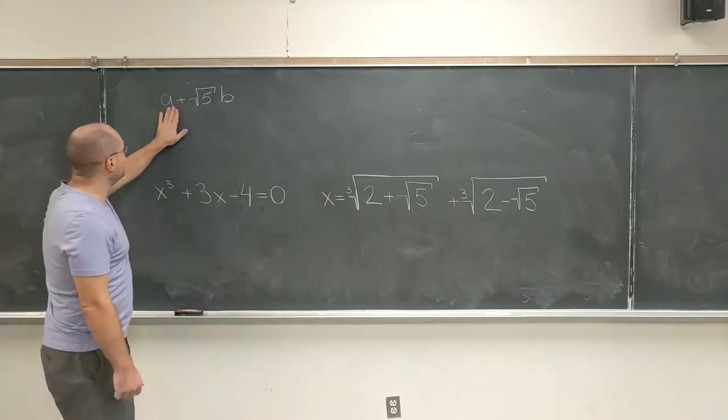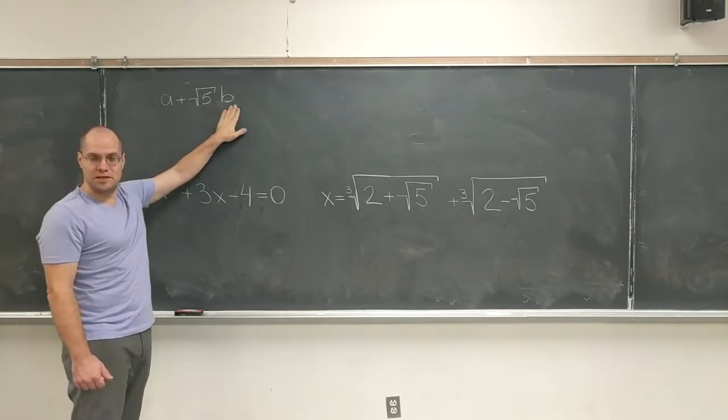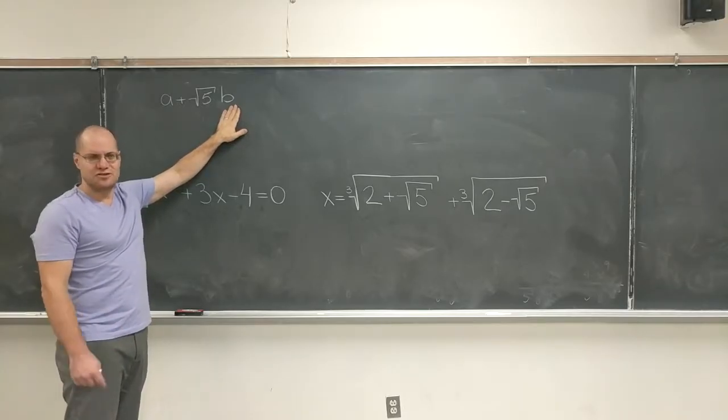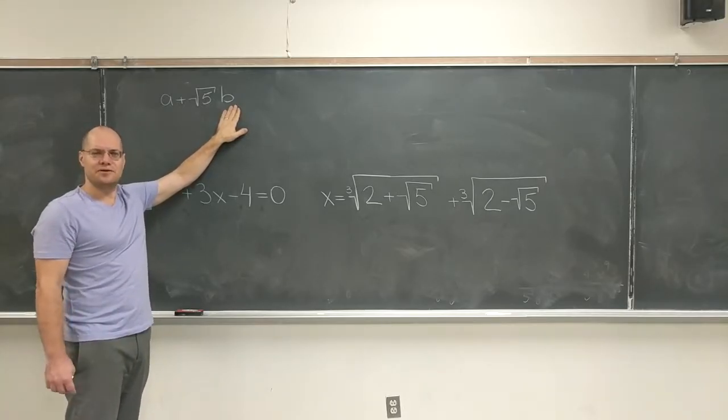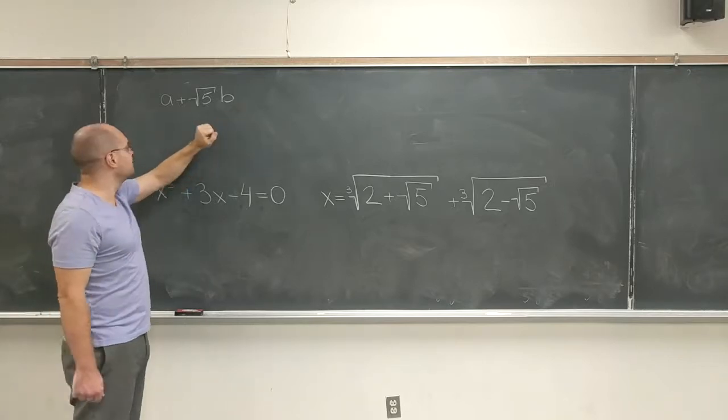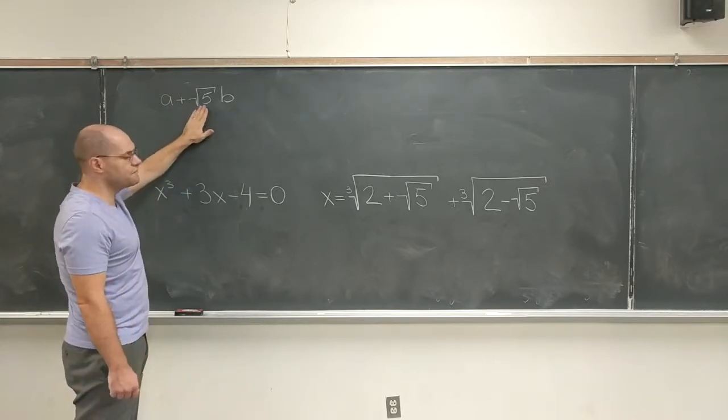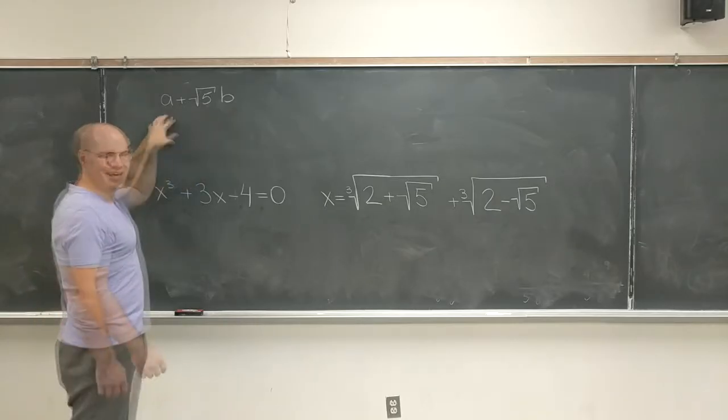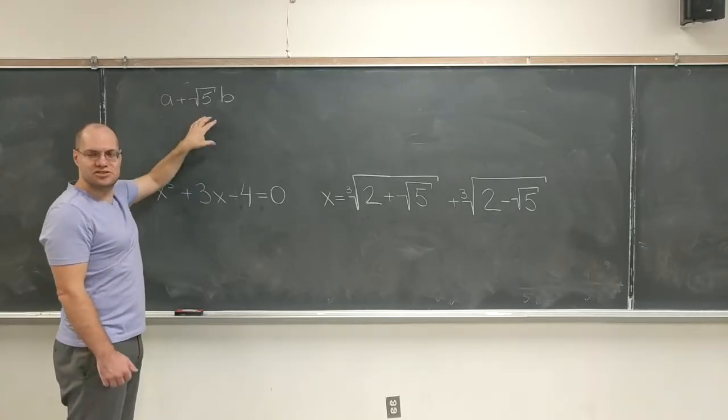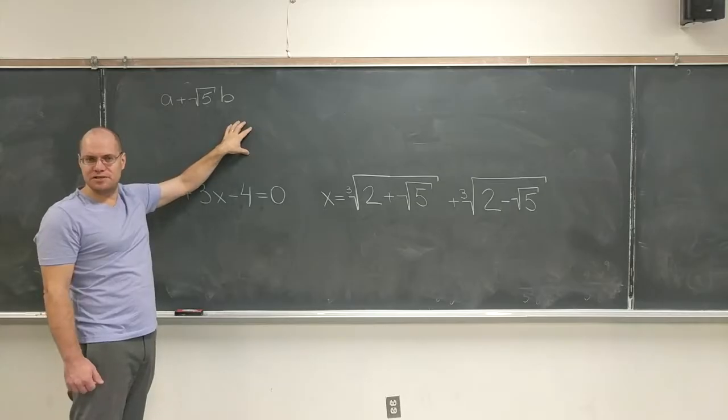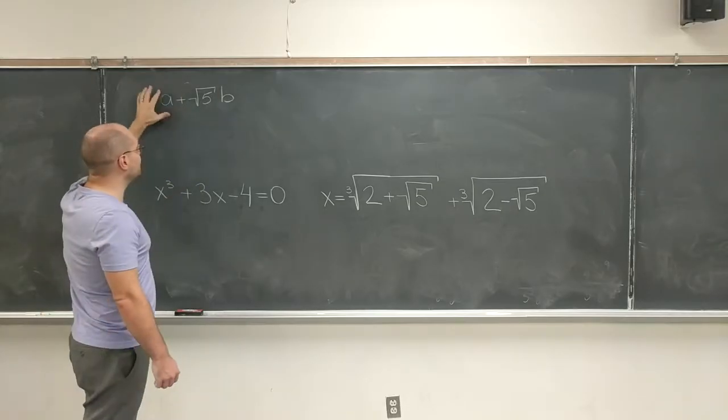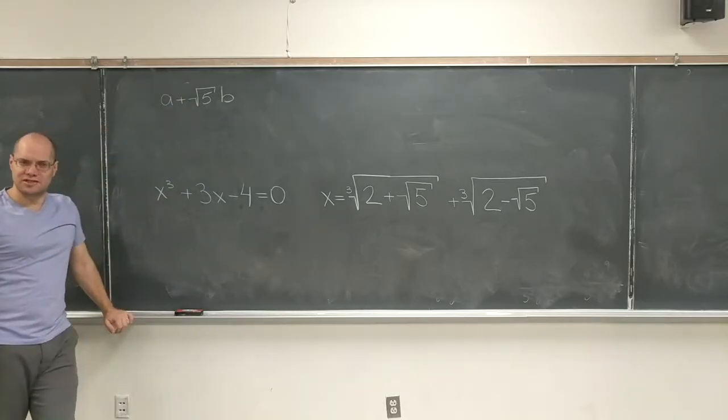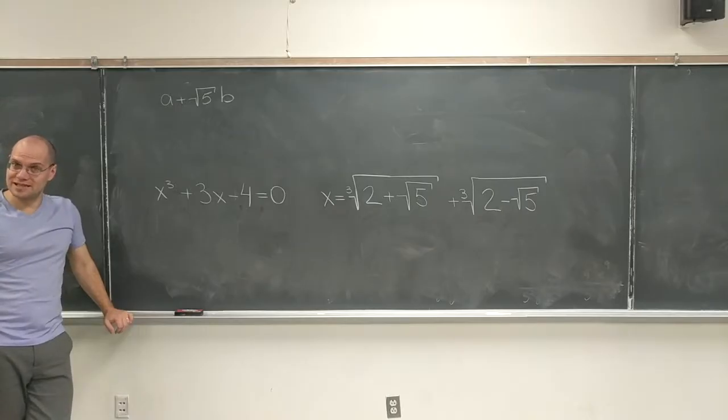Well, if one of them is a1 plus square root of 5b1, I'm not even going to write it down. It's one of those things that should not be dignified with being written down. And another number is a2 plus square root of 5b2. I add them together. I get a1 plus a2 plus square root of 5(b1 plus b2). So this family of numbers is closed under addition.